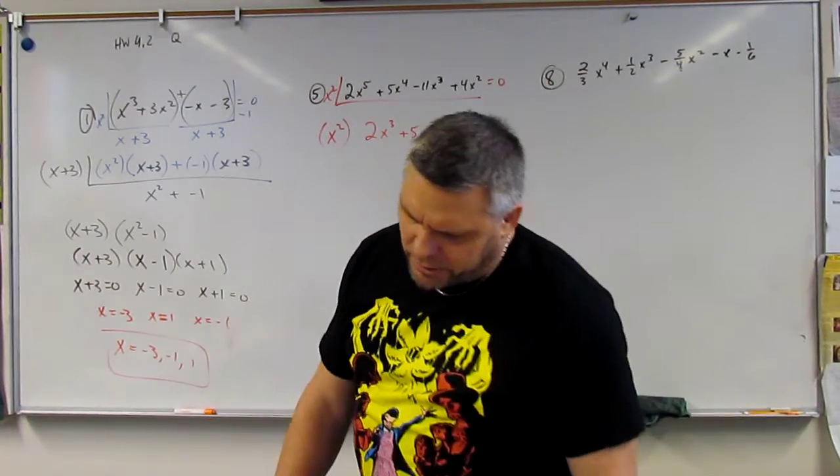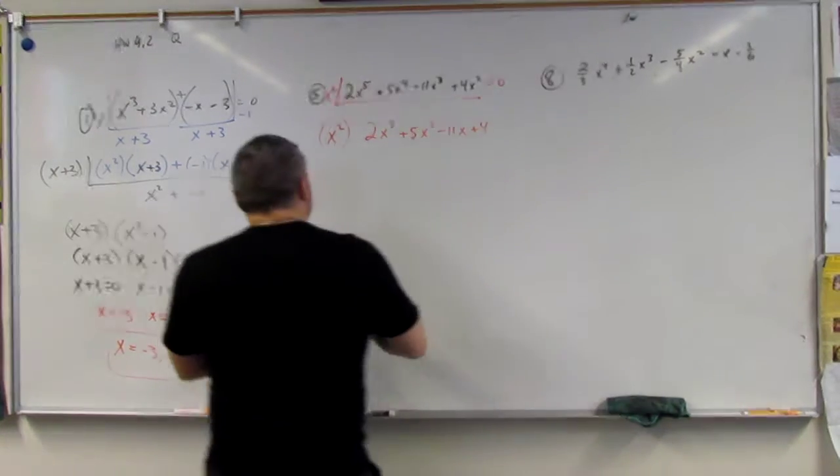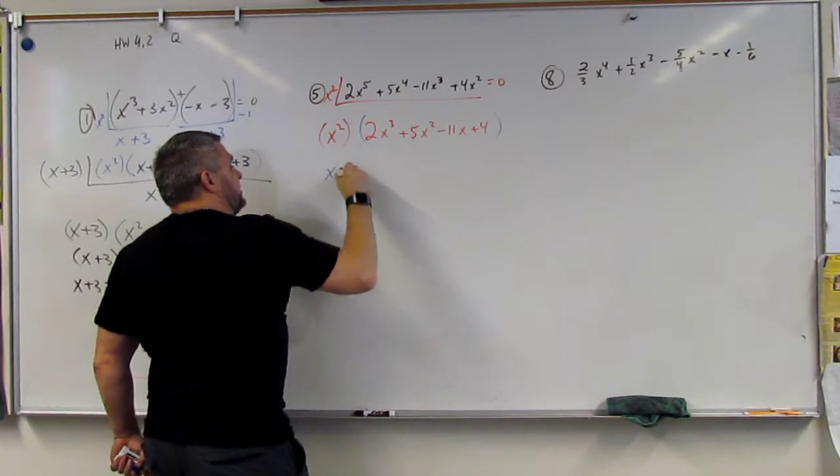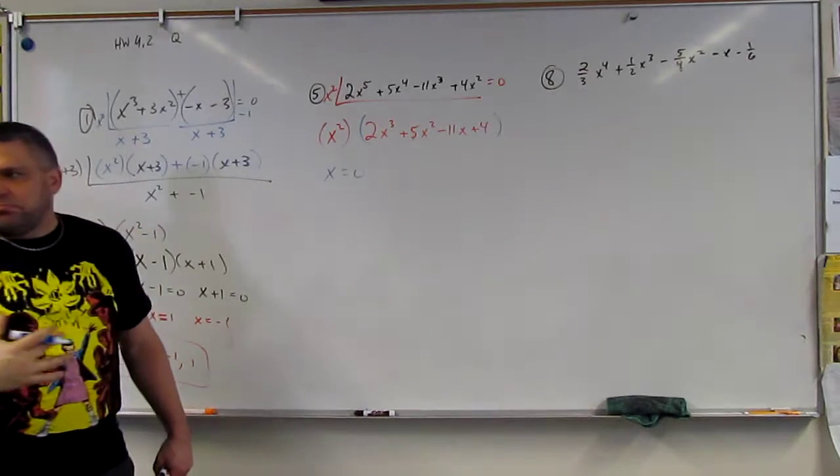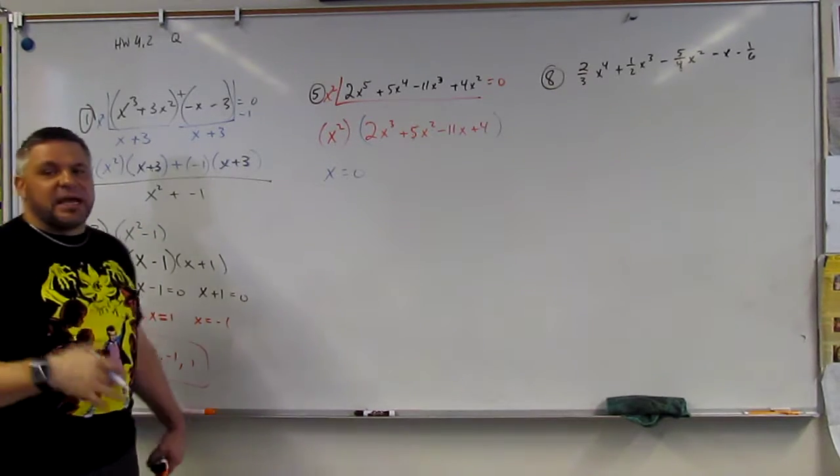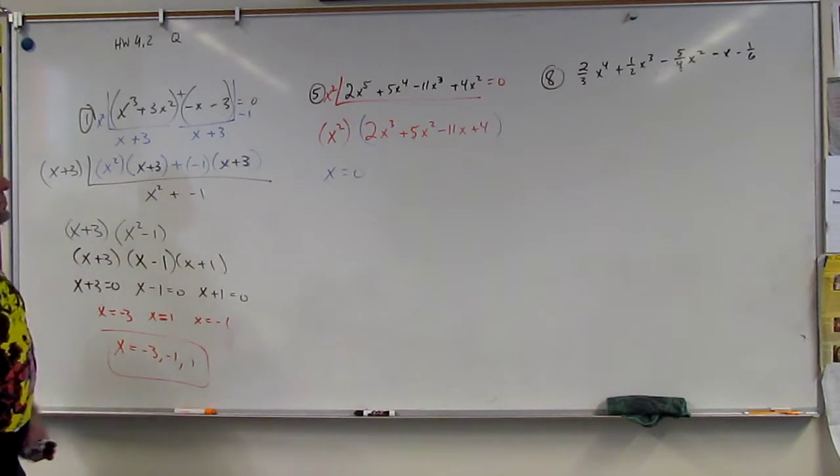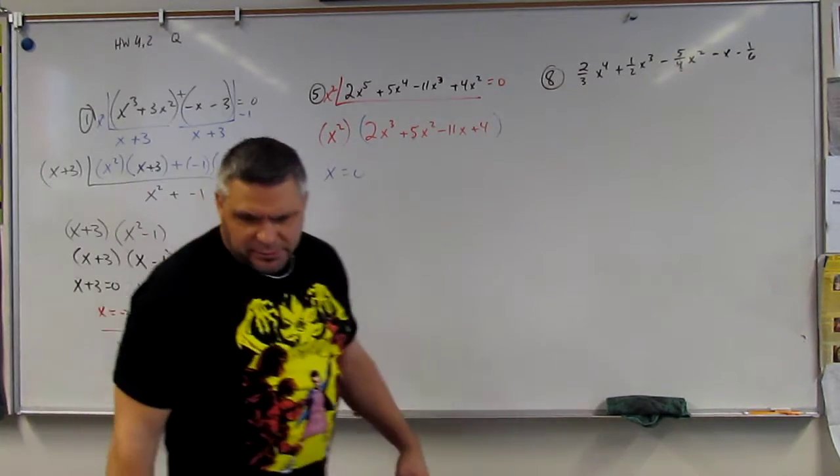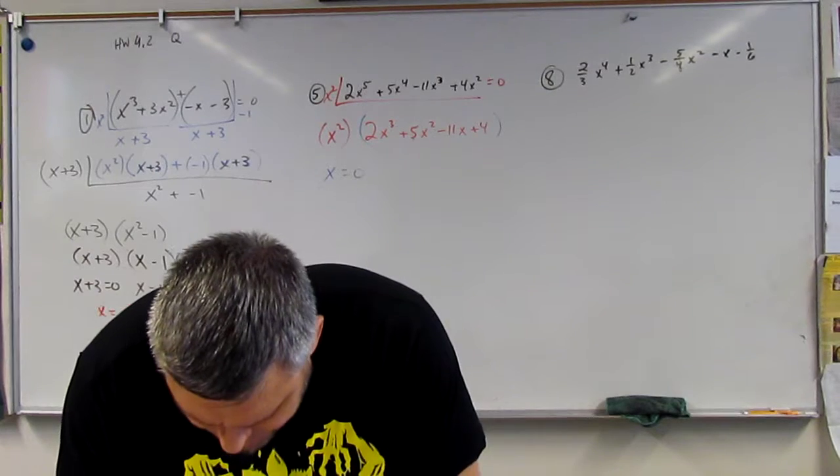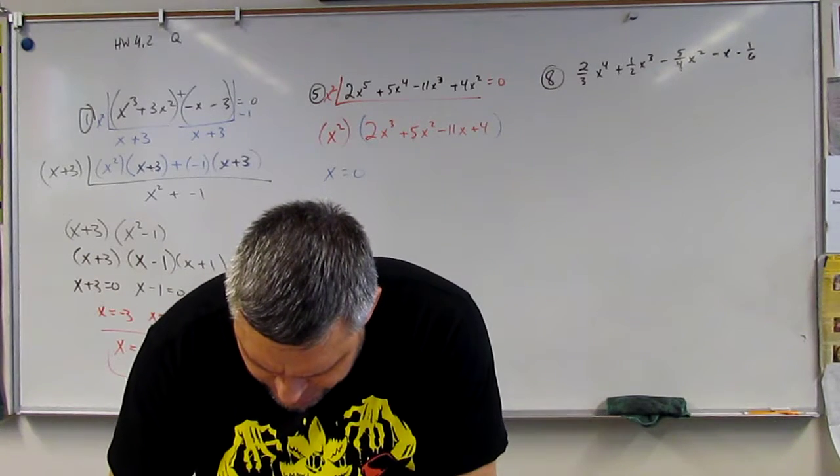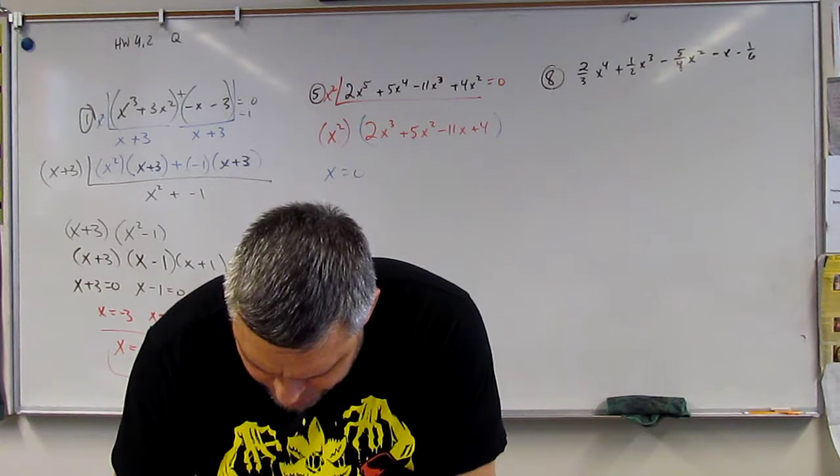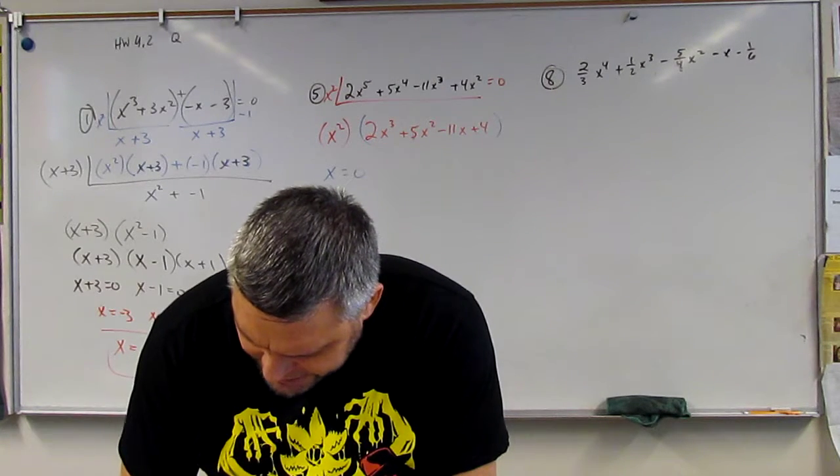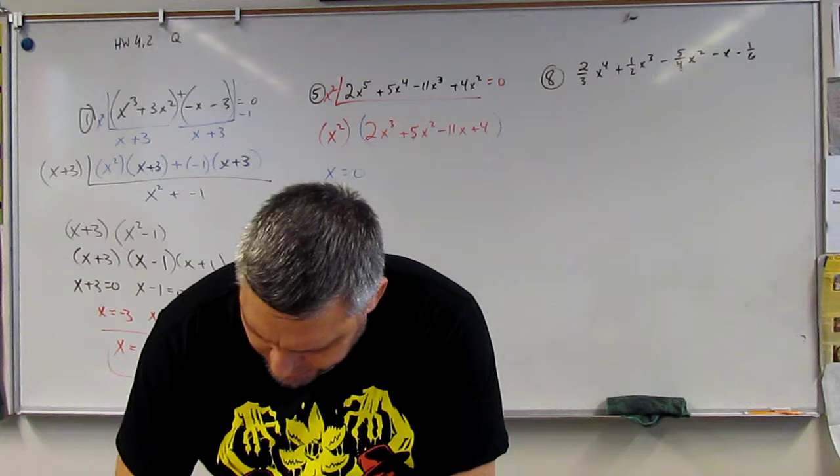So we know, we know right off the bat, that X is equal to 0. Because there's an X in every single one of them, so X can equal 0. But now we've got to use rational zero test.